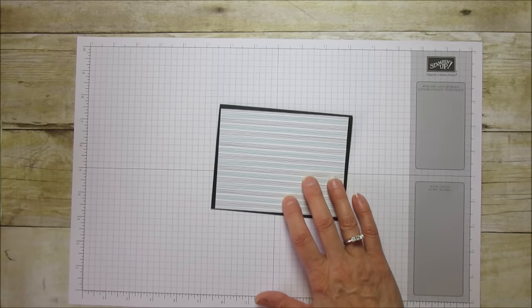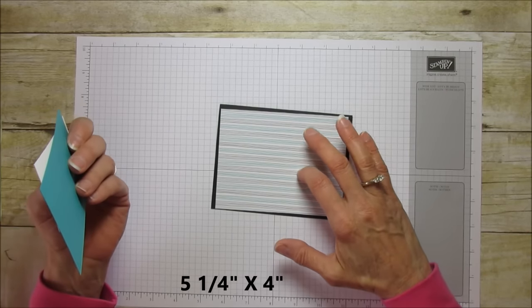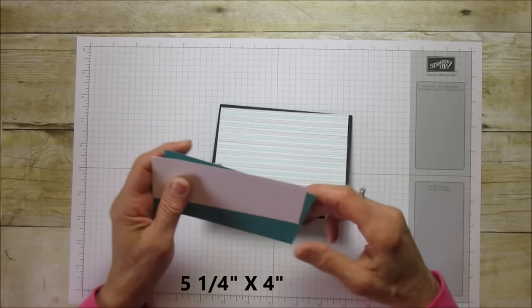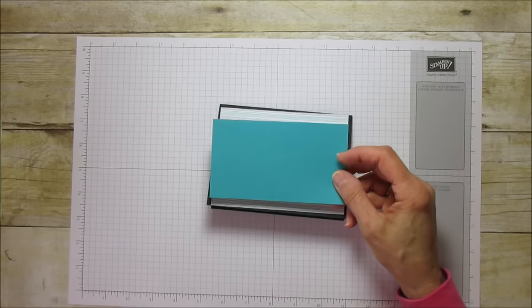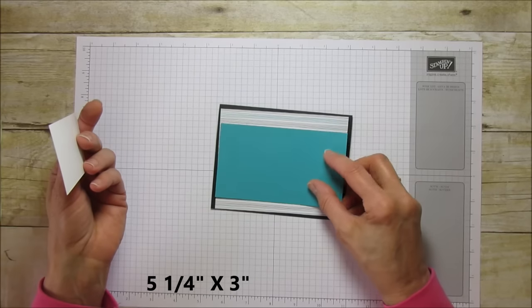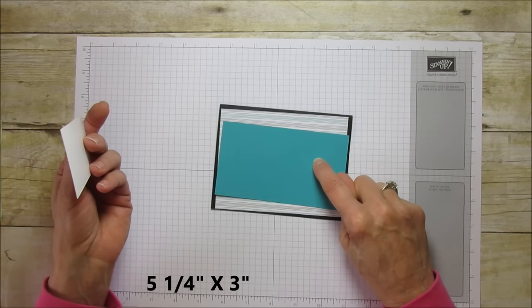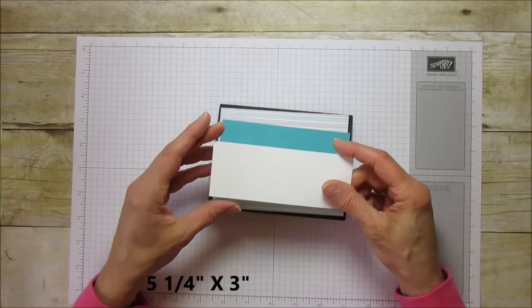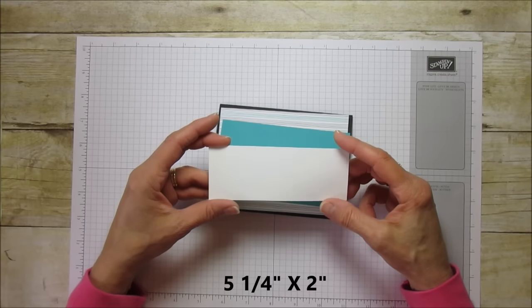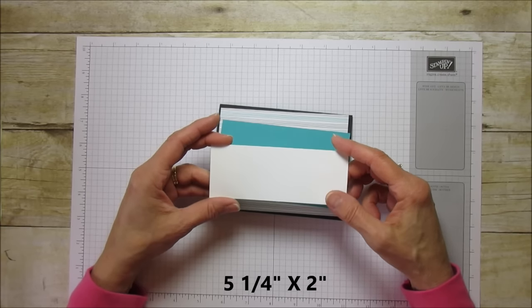This is the designer series paper we're using from the six-by-six Have a Cuppa pack. This piece is five and a quarter by four. You'll need Bermuda Bay at five and a quarter by three - we're going to emboss this with the embossing folder. Then to stamp the bike and emboss the sentiment is five and a quarter by two.